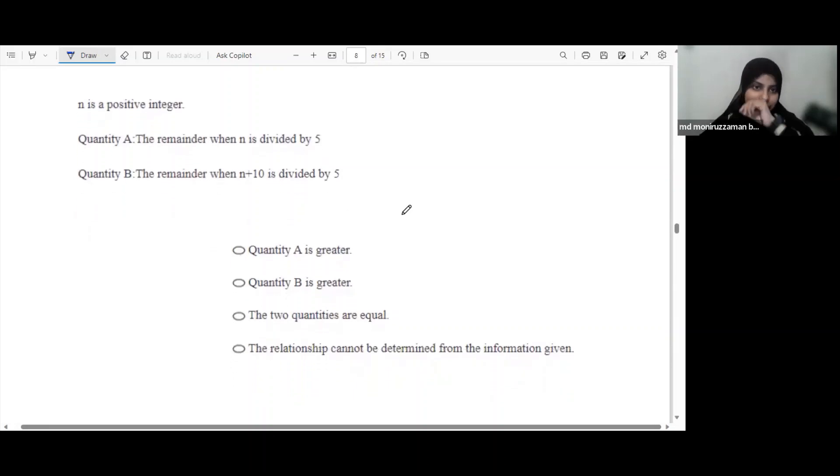n is a positive integer. The remainder when n is divided by 5 - let's say we have the natural numbers 1, 2, 3, 4, 5.